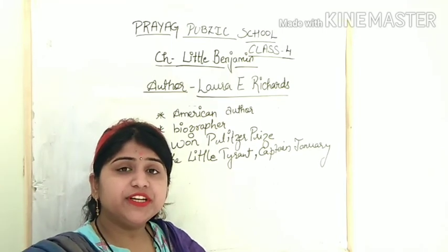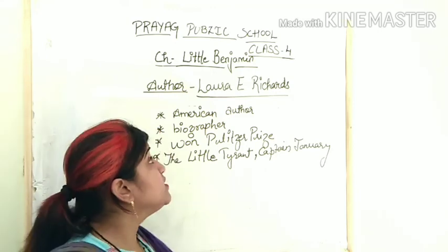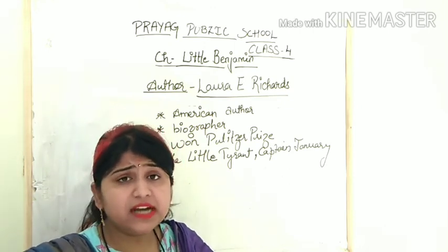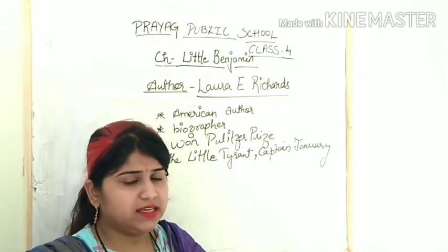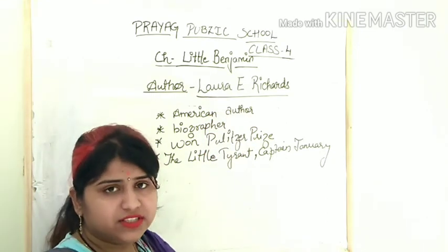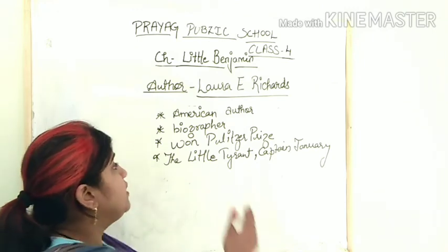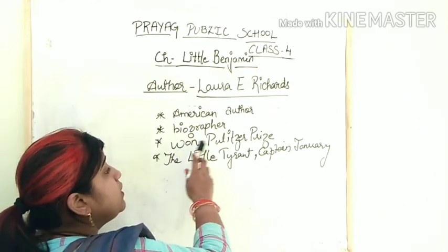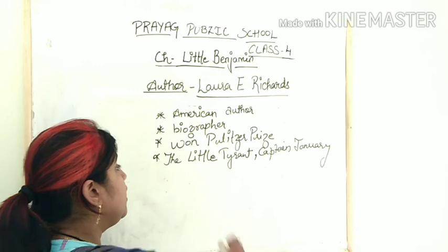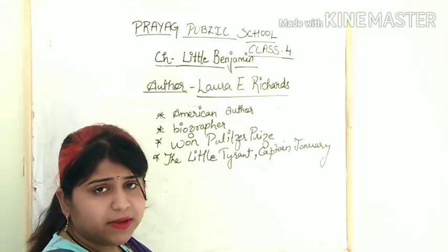Good morning students, welcome to your English literature class. Today we are going to start with a new chapter in your English literature book. The name of the chapter is 'Little Benjamin', page number 24. Before starting, let's know about the author. The author's name is Laura E. Richards. She was an American author, a biographer, and she received the very honorable Pulitzer Prize.